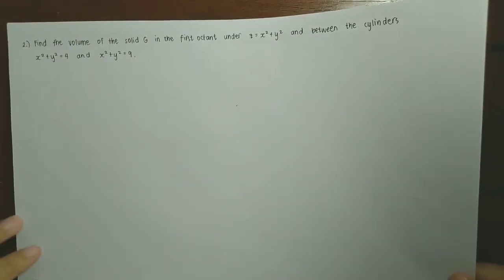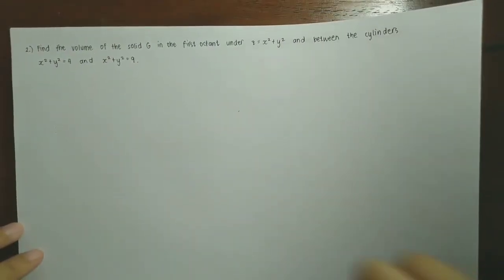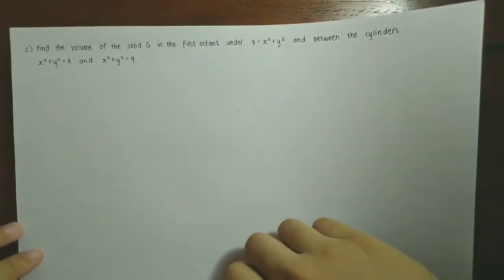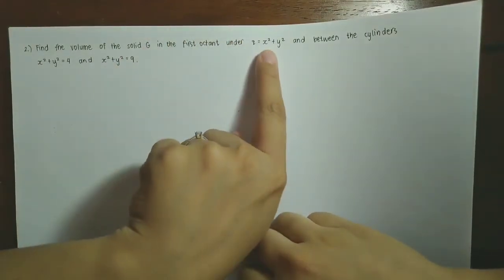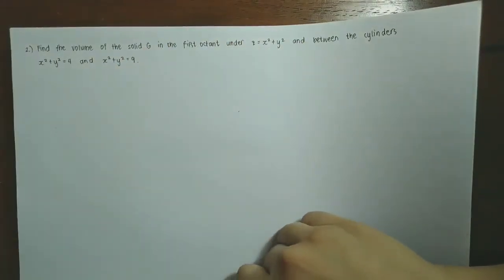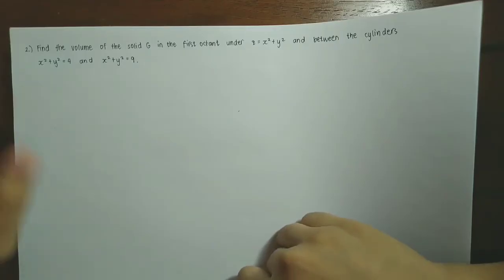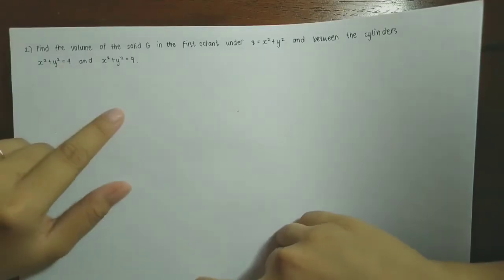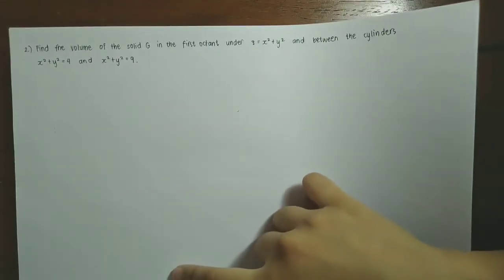Let's move on to the next problem. Find the volume of the solid G in the first octant, under z = x² + y², and between the cylinders x² + y² = 4 and x² + y² = 9.